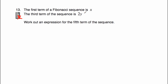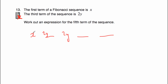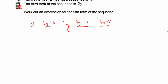Question number 13 says the first term of a Fibonacci sequence is X, the third term is 2Y, and we've been asked to work out an expression for the fifth term. So let's first find the second term. When we add X and the second term, we get 2Y. There's no X in the third term, so the X terms must cancel, meaning the second term would have to be 2Y minus X. Let's check: 2Y minus X plus X gives us 2Y. To get the fourth term, we add the second and third: 2Y minus X plus 2Y is 4Y minus X. And finally, to get the fifth term, we add the third and fourth: 2Y plus 4Y minus X gives us 6Y minus X. So the fifth term would be 6Y minus X.